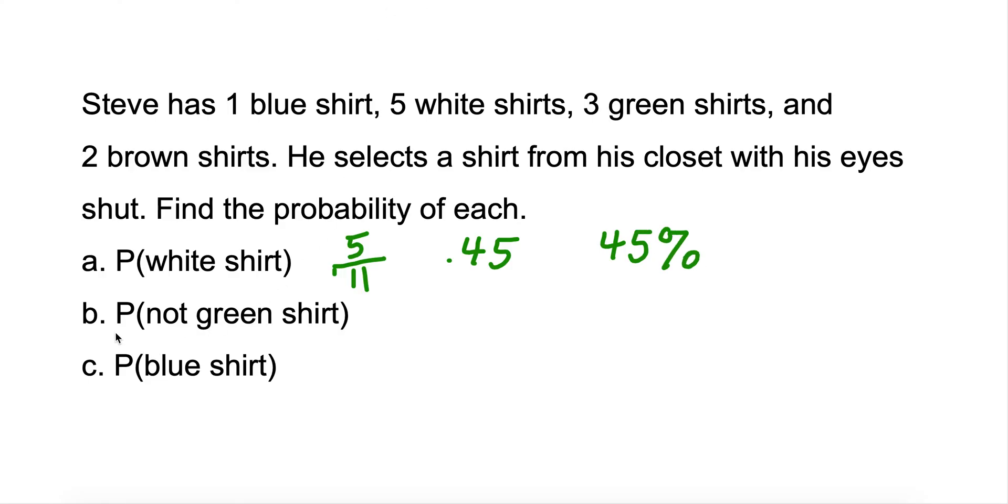Now let's look at B, the probability of a not green shirt. There's a couple ways we can solve that. He still has 11 shirts, but we can add up the ones that aren't green. One plus five plus two gives us 8 shirts. Another way to find this is to take the 11 and subtract how many green shirts he has, which is 3. So 11 minus 3 is 8.